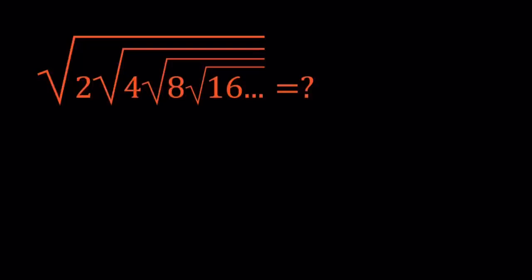Hello everyone. In this video we're going to be simplifying an infinite radical expression. We have the square root of 2 times the square root of 4 times the square root of 8 times the square root of 16, so on and so forth. All of these are square roots and the numbers inside the radicals are all powers of 2. Provided that this expression converges, we're going to find the value to which it converges.